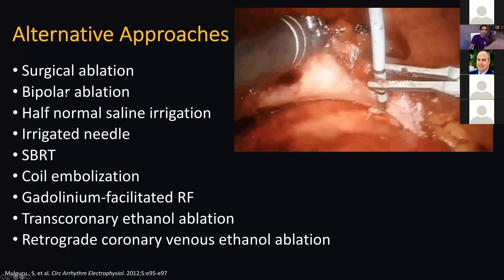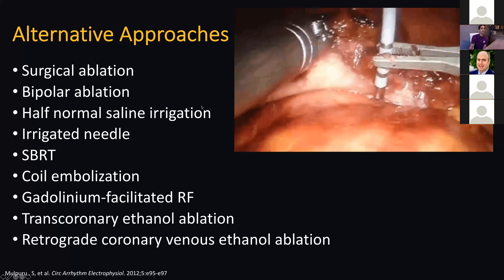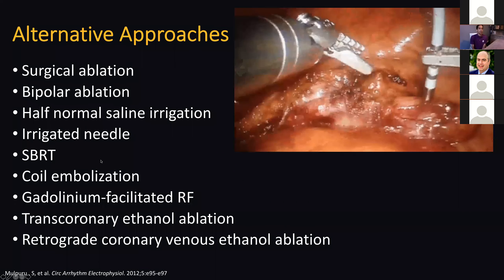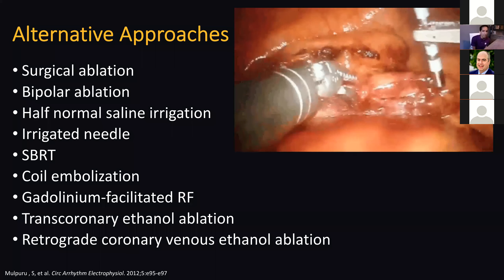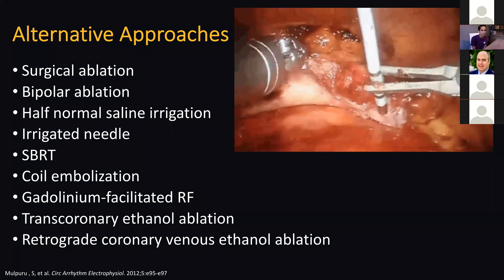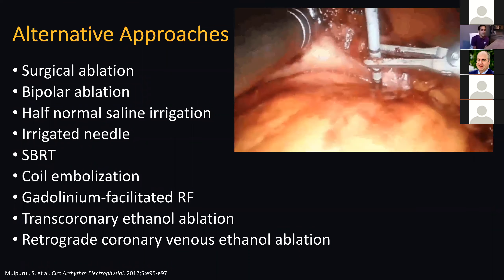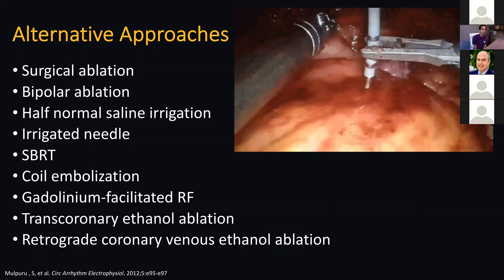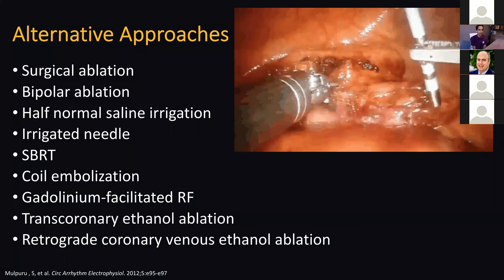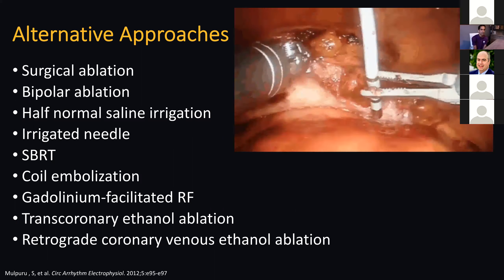The irrigated needle approach has been tried in intramural VTs — I've not tried it in this specific region. I believe the Washington group with Cuculich has tried ablating with radiation in this region, and they've had some success with that. There are some other more exotic approaches I don't know too much about, but I'd be happy for our panel to comment on them.